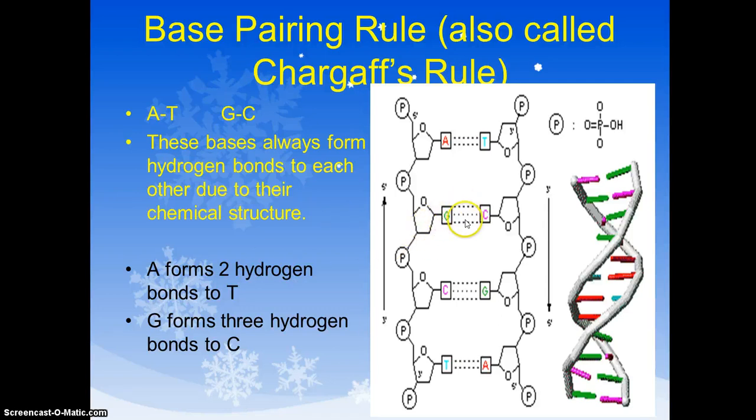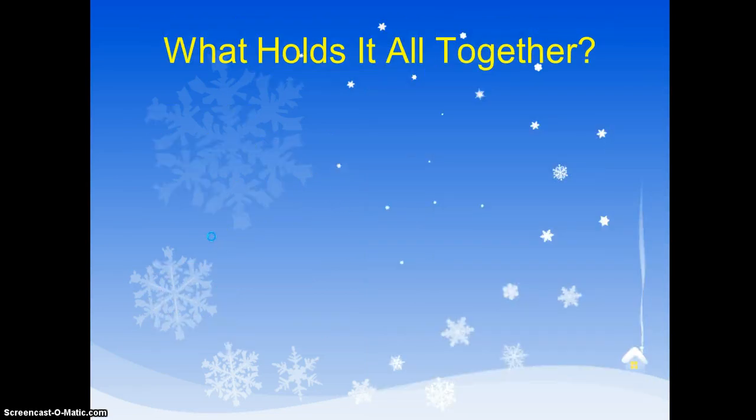Guanines make three hydrogen bonds to the cytosines. And you can see that on this picture. There's always three dotted lines between a C and a G showing you those three hydrogen bonds between the guanines and the cytosines.